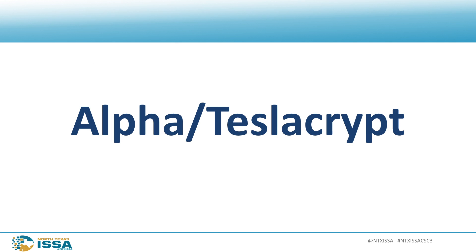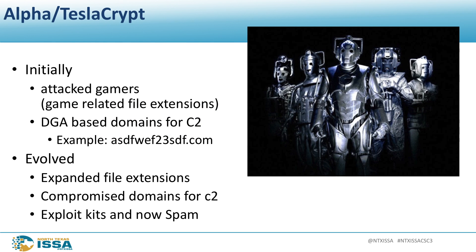The next one was Alpha/TeslaCrypt. These originally targeted video gamers, going after saved files and character files of favorite video games, using DGAs for their C2 servers. But they evolved — they figured video gamers are great, but we can extort more people. So they expanded the number of file extensions they encrypted, started using hacked websites for command and control rather than their own DGAs, and started using exploit kits and malvertising to spread in addition to spam.